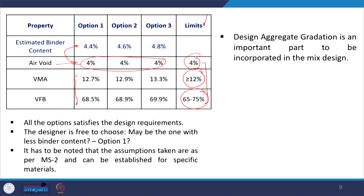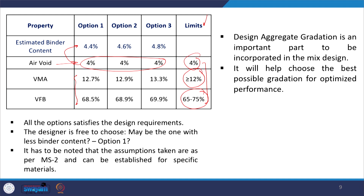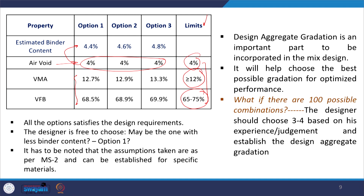Since all three options are good enough, we can also look at the economy or cost of the mix. Option one has the least binder content and also satisfies all the criteria — therefore, the cost of this mix will also be lower in comparison to options two and three. A designer can choose option one as the design aggregate gradation and then proceed to the next step to complete the mix design process. If using STAB and it shows 100 or 200 possible combinations, the designer can choose 3 to 4 options based on experience, considering coarse gradation, fine gradation, and a middle gradation, perform the Design Aggregate Gradation on these, and finally select one.